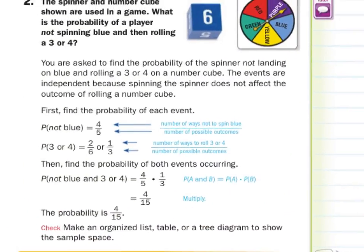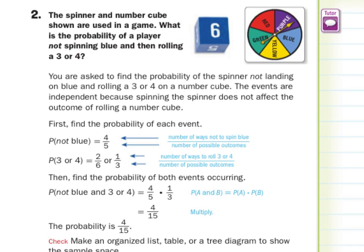In guided example two, the spinner and number cube shown are used in a game. What is the probability of a player not spinning blue and then rolling a 3 or 4? The events are independent because spinning the spinner does not affect the outcome of rolling a number cube. The probability of not getting blue on the spinner is 4 out of 5 spots. The probability of getting a 3 or 4 on the number cube is 2 out of 6, which is 1 third. So we take 4 fifths times 1 third to get 4 fifteenths.